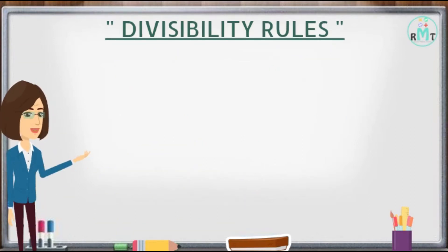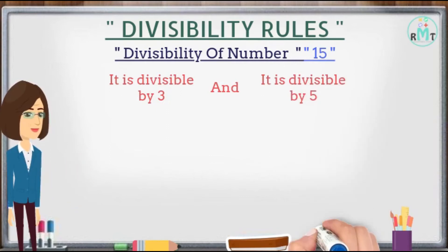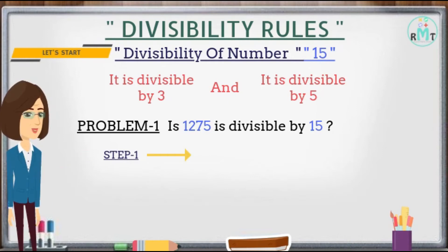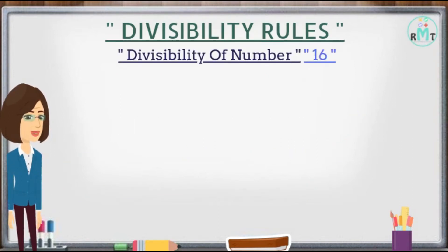Now we will check the divisibility rule for number 15: any number is divisible by 15 if it is divisible by both 3 and 5. Problem 1: Is 1275 divisible by 15? Step 1: Add the individual digits of 1275 and get 15, which is divisible by 3. Step 2: 1275 is completely divisible by 5 as the last digit is 5. Hence 1275 is completely divisible by 15.